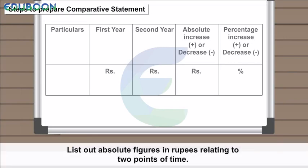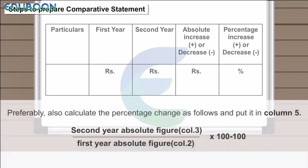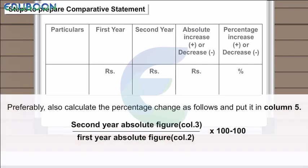Steps to Prepare Comparative Statement: Step 1 — List out absolute figures in rupees relating to two points of time. Step 2 — Find out the change in absolute figures by subtracting the first year (Column 2) from the second year (Column 3), and indicate the changes as increase (+) or decrease (−) in Column 4.